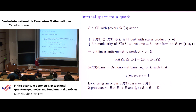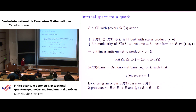The unimodularity condition simply means that there is a complex volume which is preserved. This complex volume is a three-form which you can normalize such that its norm is one by a scaling, and with that you can define an antisymmetry. You have to make a distinction between dimension three and dimension two.